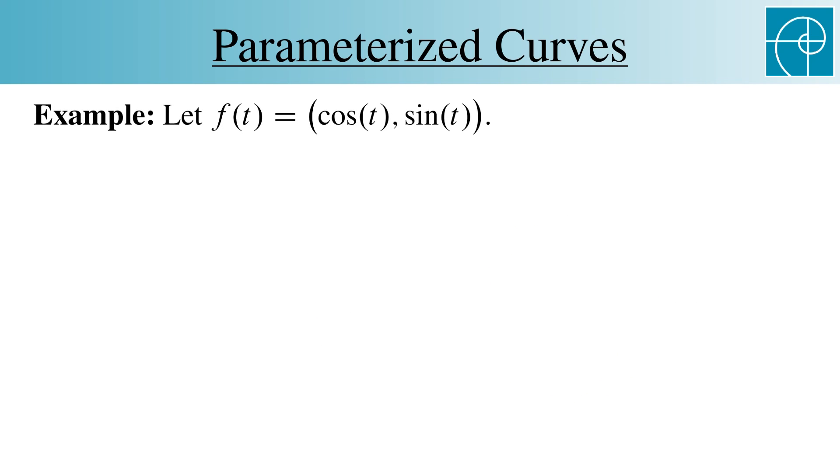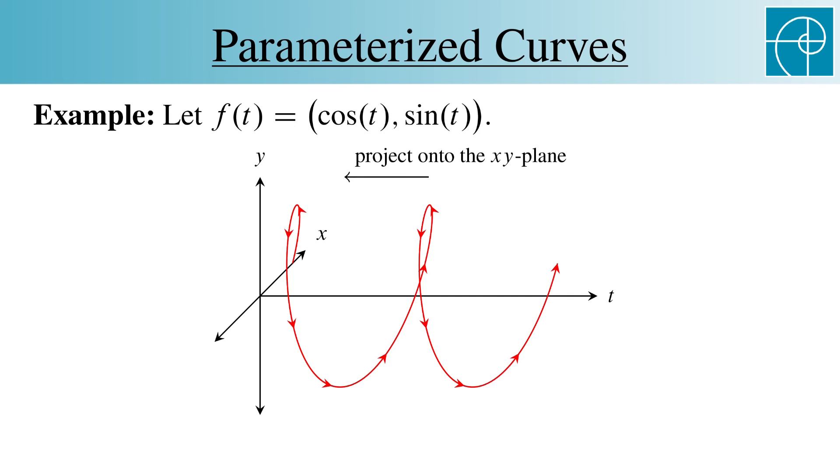For those of you who are comfortable with three-dimensional space, we can also see this circle as a projection. If we graph the independent and dependent variables on one graph in three dimensions, we get a helix. We can then project this onto the x-y plane to get the graph of the range, which is the circle we saw before.